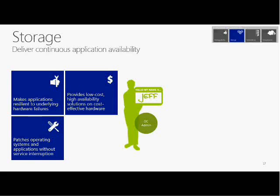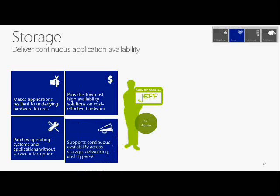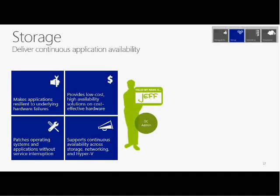Once completed, I can see the disk available. I can view properties to get the IQN number and description. I can create a new target and see who the initiators are — cluster node 1 and 2 are the initiators — and quickly add more initiators. iSCSI is part of my OS. Now, storage pools — a new feature introduced in Windows Server 2012.